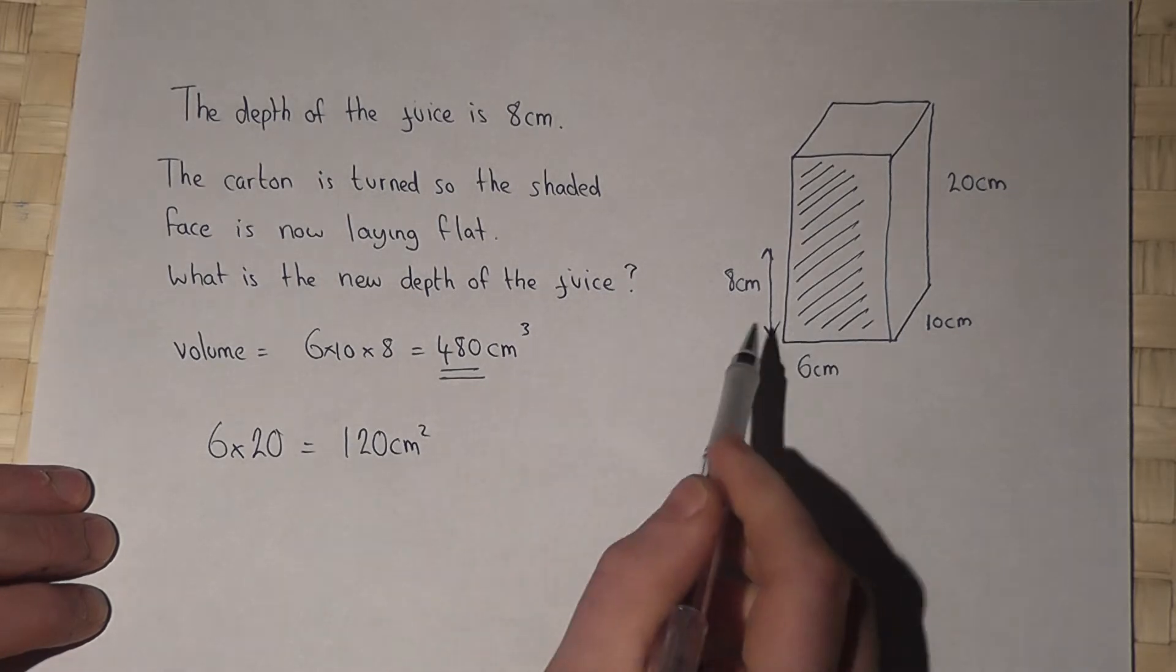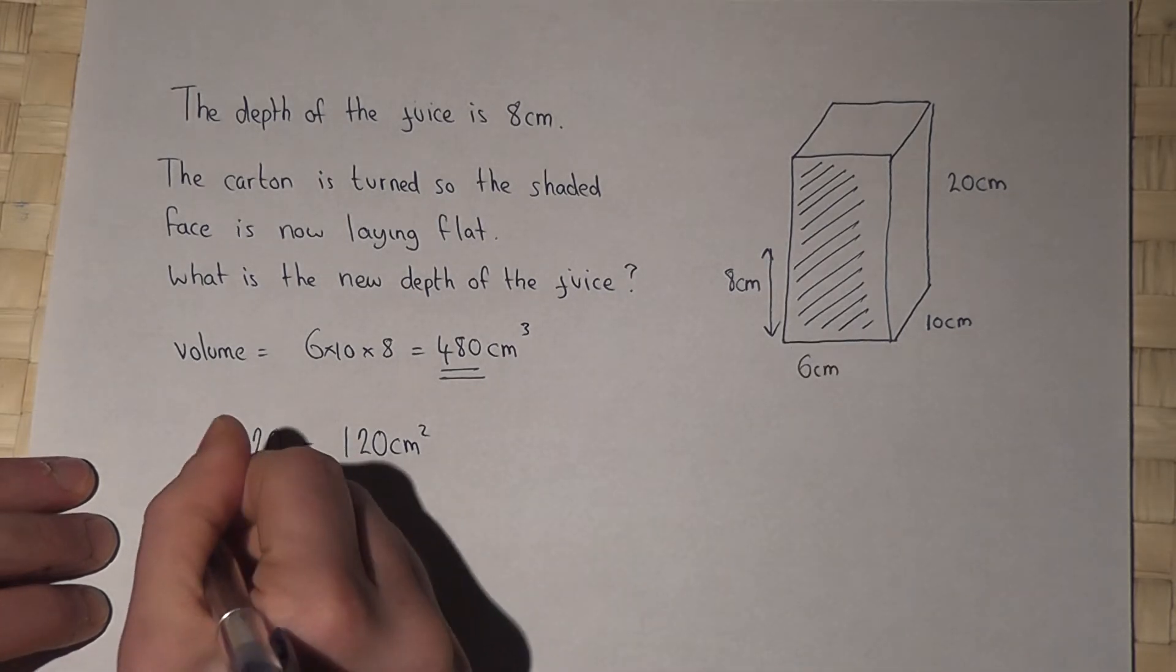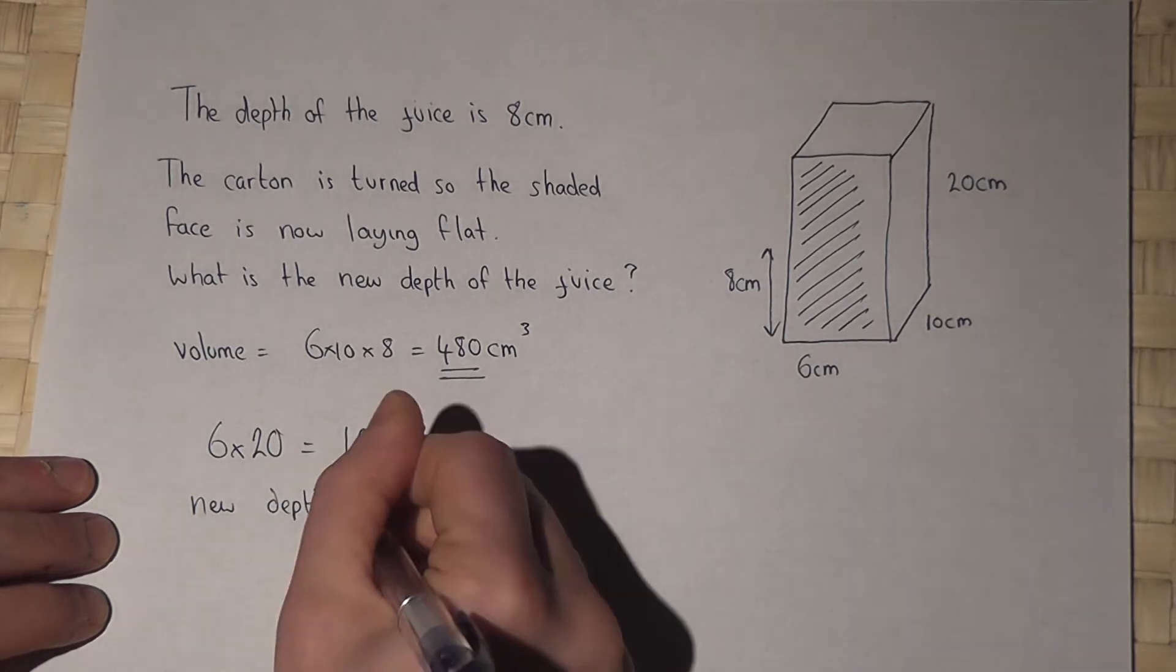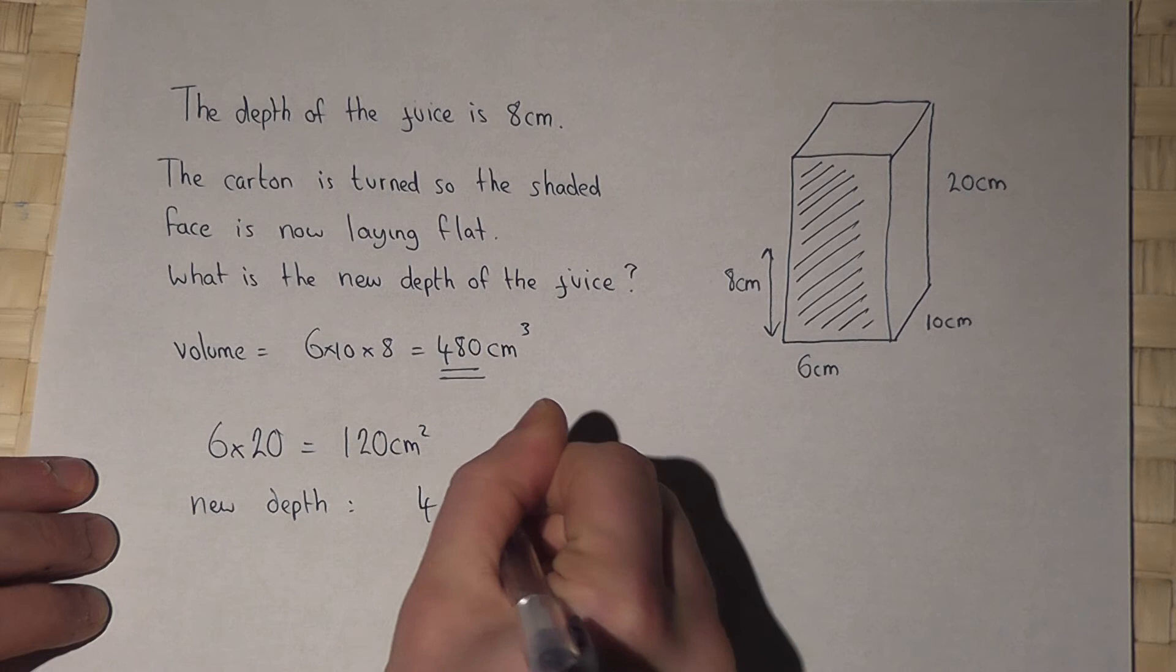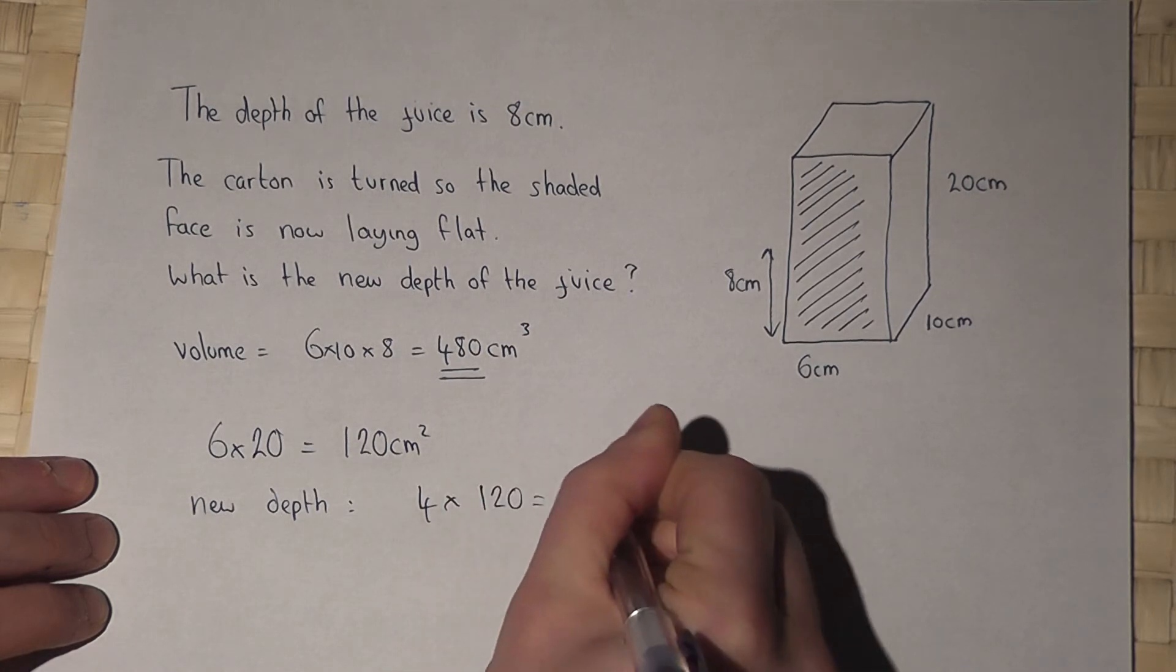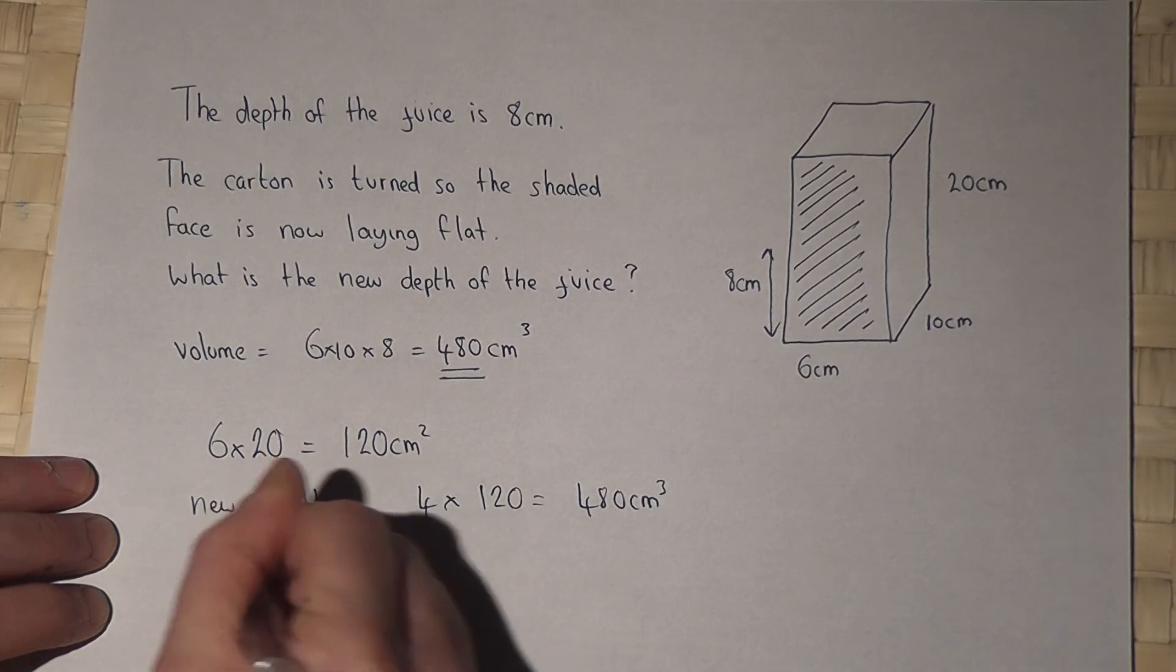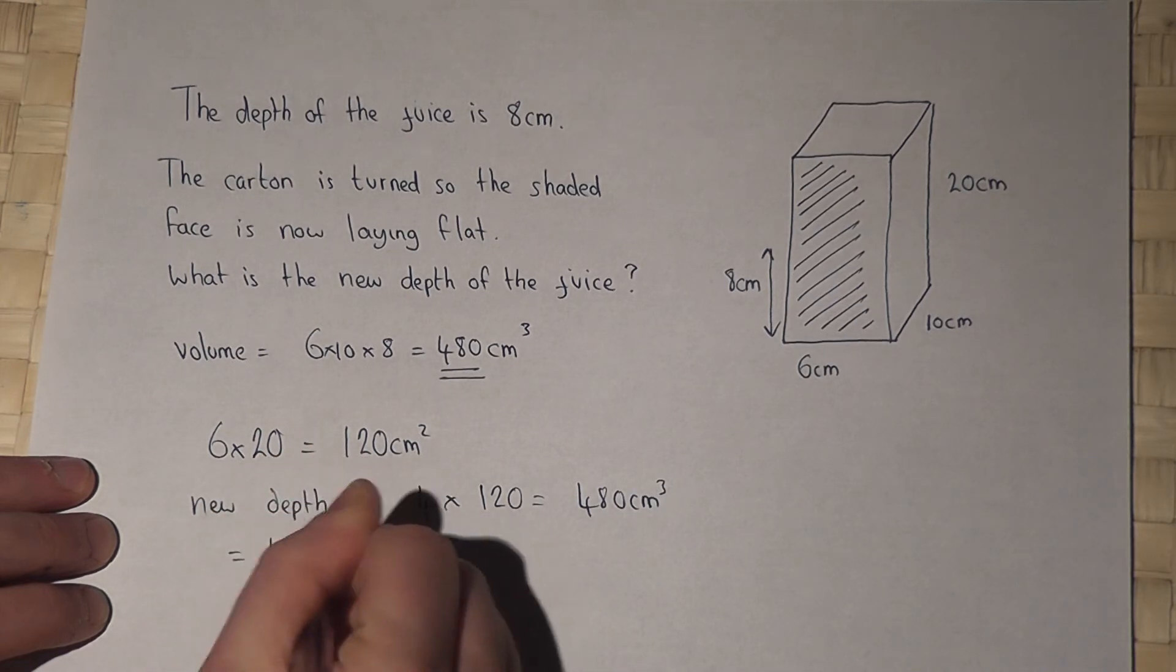Now because the volume of juice must be the same as before, then the new depth must be 4 because 4 times 120 is 480 centimetres cubed. So the new depth equals 4 centimetres.